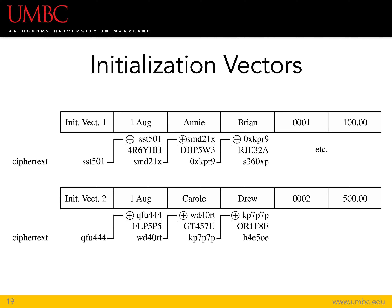To prevent this, we basically create an initialization vector that we add into the message as part of the encryption process and then remove as part of the decryption process when going back the other direction. The initialization vector is going to be a randomized value, and that produces randomized-looking ciphertext. For those same two messages, the block that was the same in the plaintext is now radically different — we have SMD21X and WD40RT as the output for the second one. That eliminates exactly the problem we were interested in.